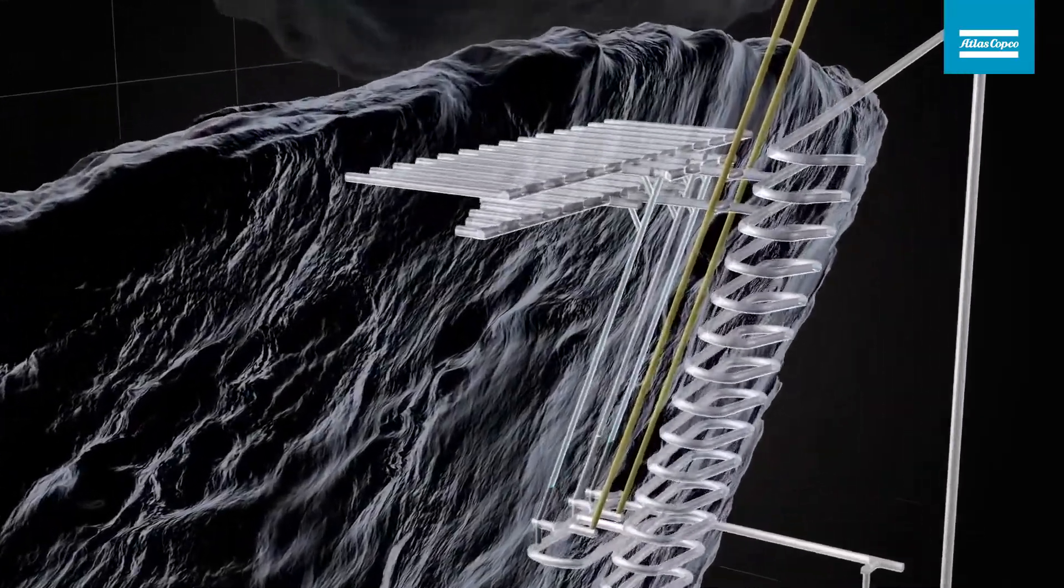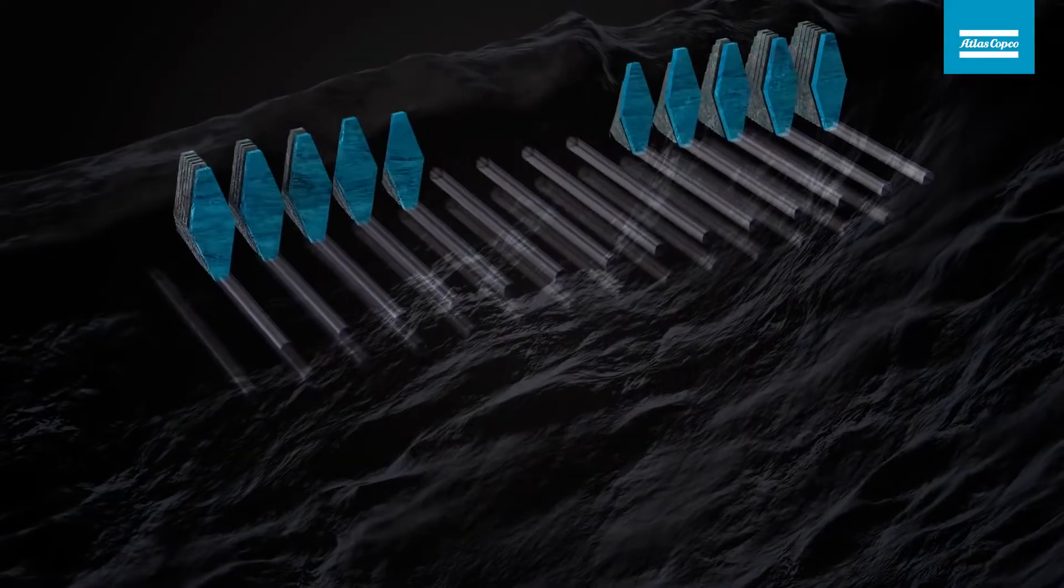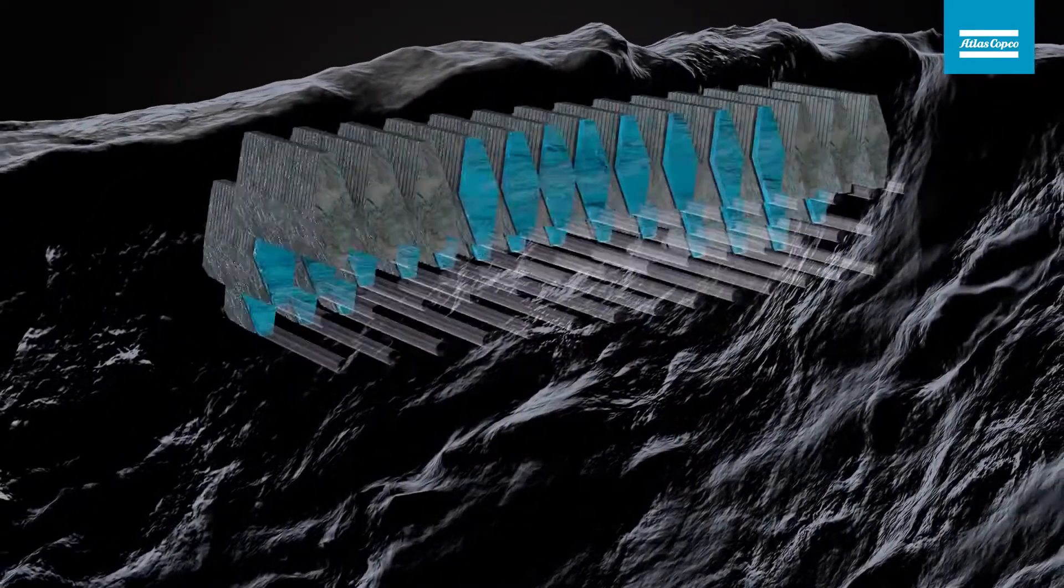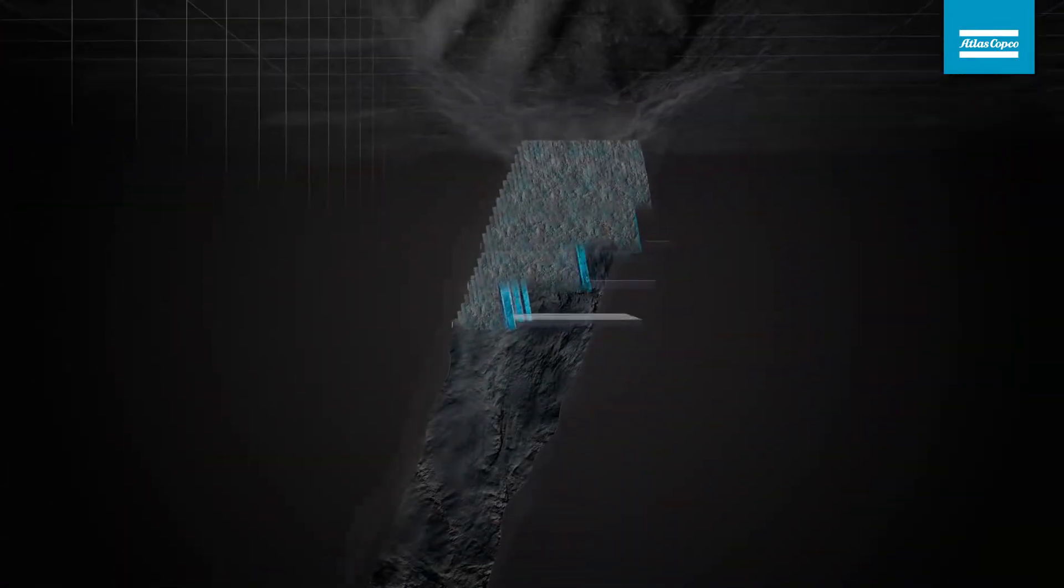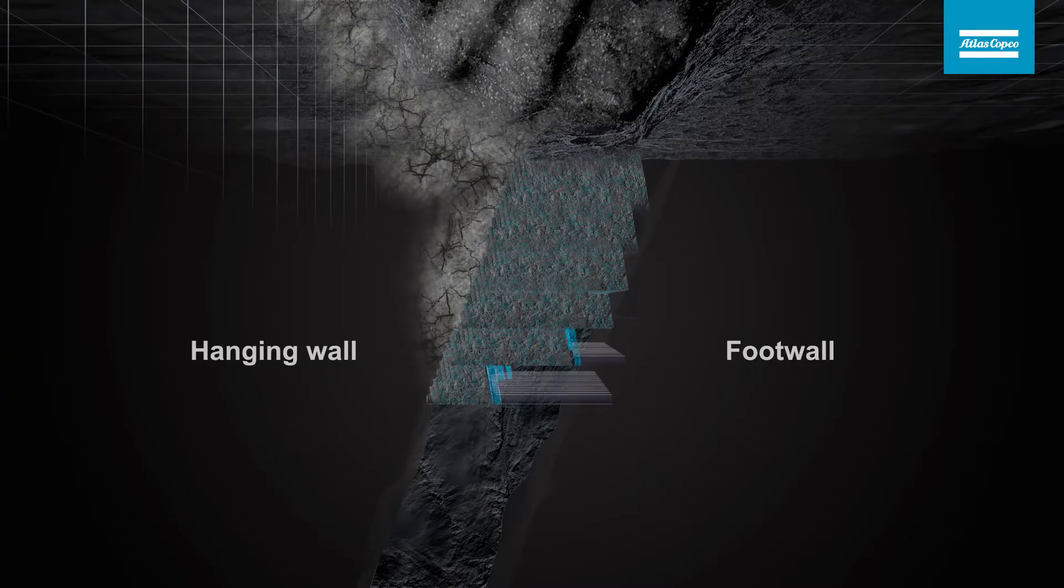Mining starts at the top of the ore body and progresses downwards in a safe sequence. It is a productive mining method where all of the ore is fragmented by blasting and the host rock in the hanging wall of the ore body caves.